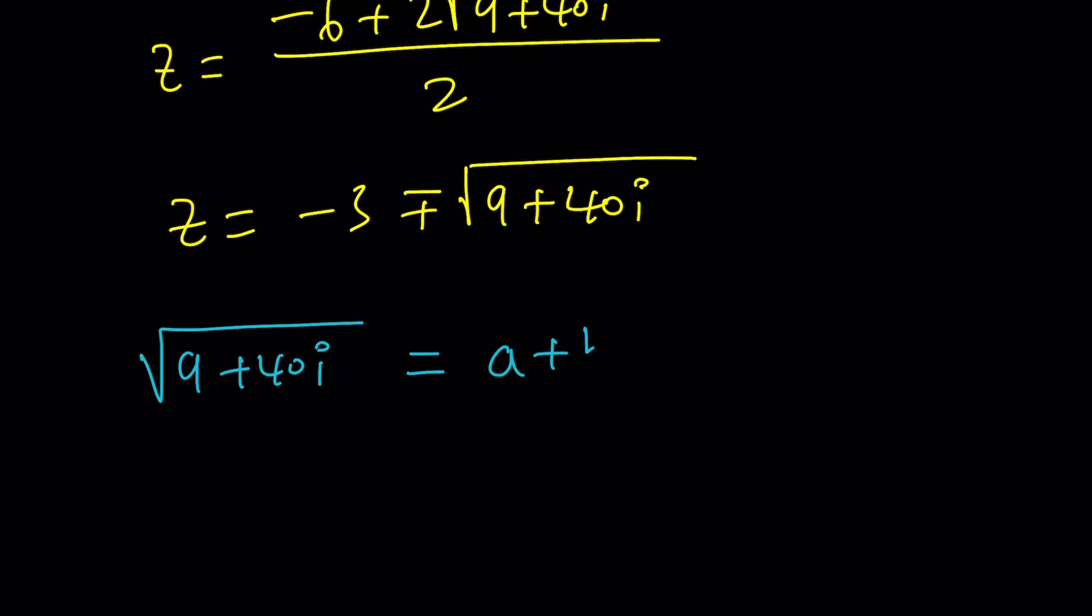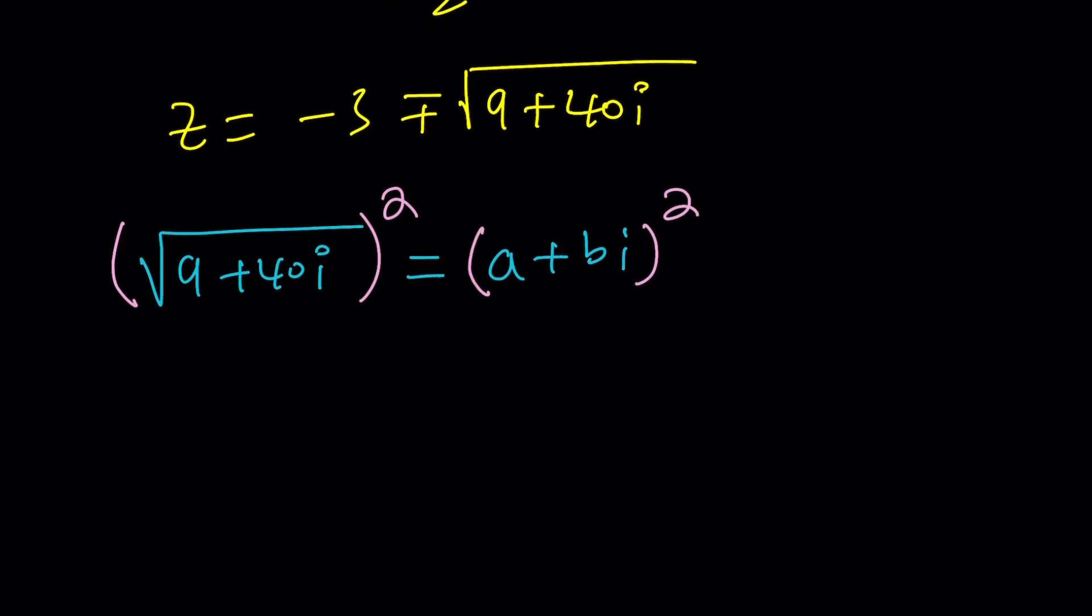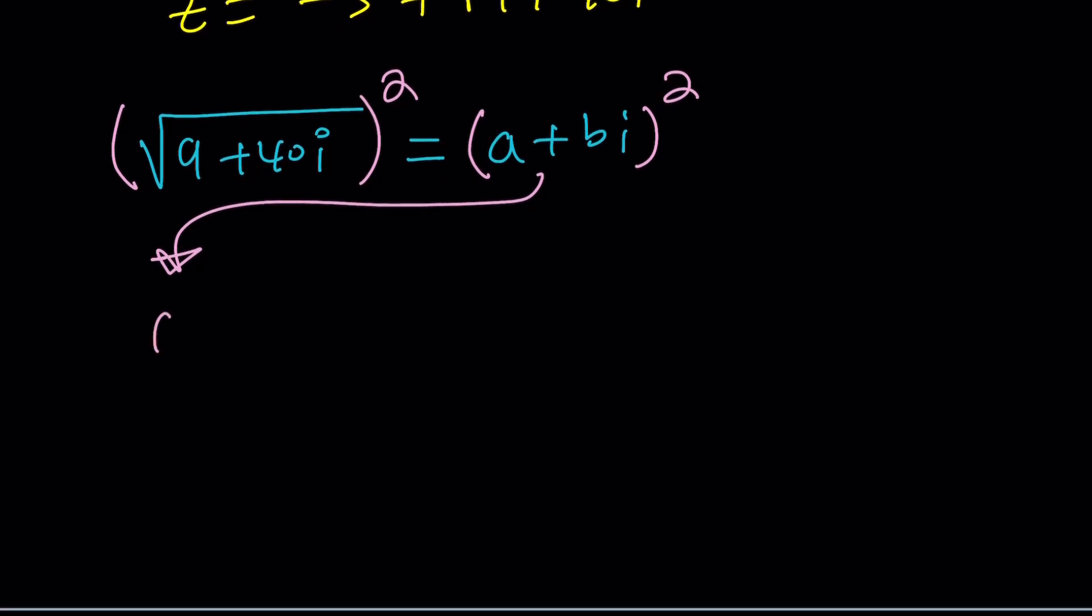So how do you find the square root of 9 plus 40i? Well, the square root of a complex number is also a complex number. Because if you square a complex number, you get a complex number. It works both ways. So let's go ahead and call this a plus bi. And then we want to go ahead and square both sides. If you square a plus bi, you're going to get a squared minus b squared from b squared i squared. Because i squared is equal to negative 1. Plus 2abi. And then, on the right-hand side, we should get 9 plus 40i, right? Because we're squaring this expression right here.